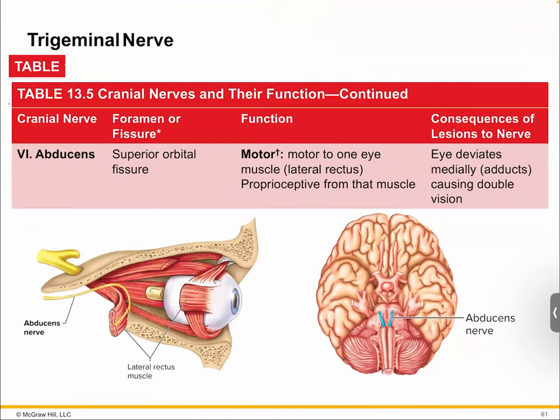Number six is the abducens — another motor eye nerve. We've accumulated a ton of eye nerves, which just goes to show how dominant our sense of vision is. This is the lateral rectus muscle, allowing you to move your eyes laterally to the side. That's governed by the abducens.